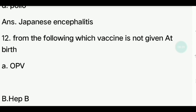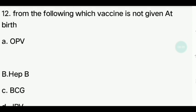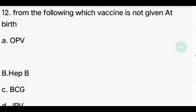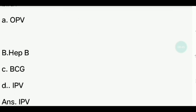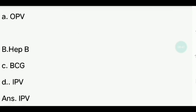Twelfth question. From the following, which vaccine is not given at birth? Options: OPV, Hepatitis B, BCG, IPV. The answer is IPV.